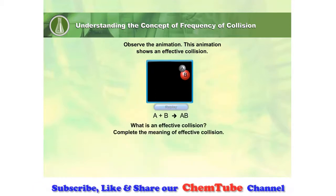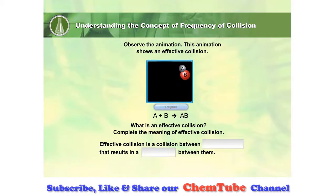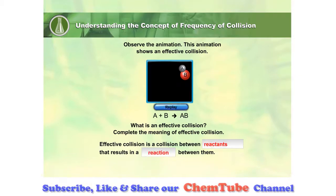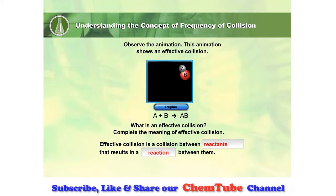What is Effective Collision? Complete the meaning of Effective Collision. Effective Collision is a collision between reactants that results in a reaction between them.